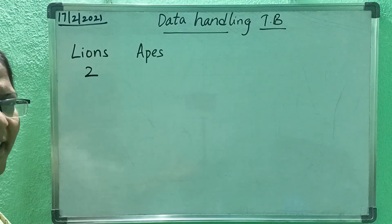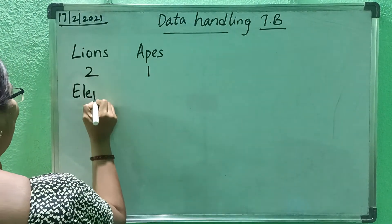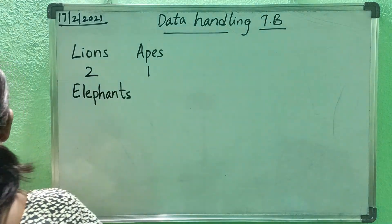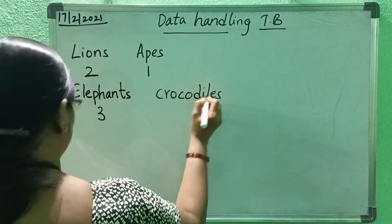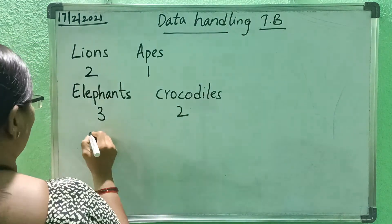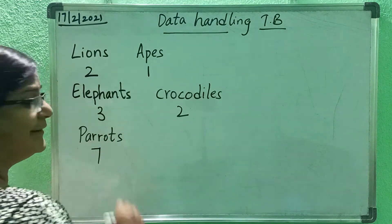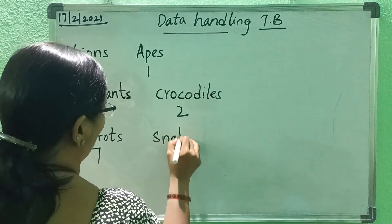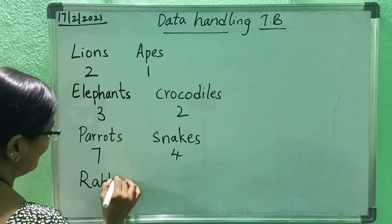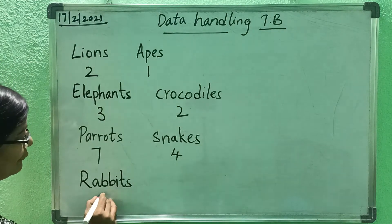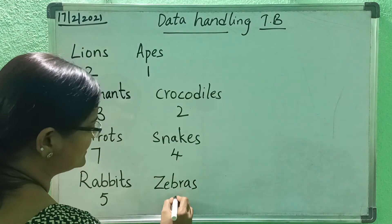Don't get confused — when teacher says apes, it means chimpanzee. Parrots — how many parrots are there? Seven. Snakes — how many snakes? Four. Rabbits — how many rabbits are there? Five. And zebras — how many zebras? Four.